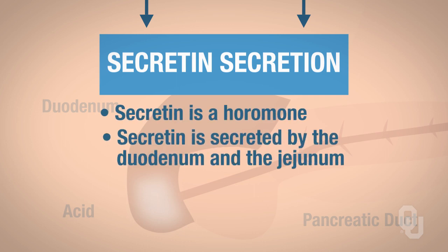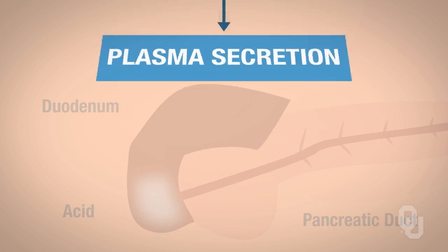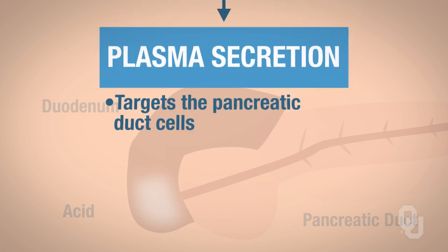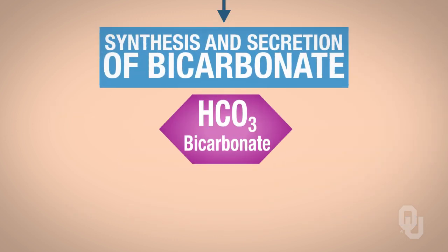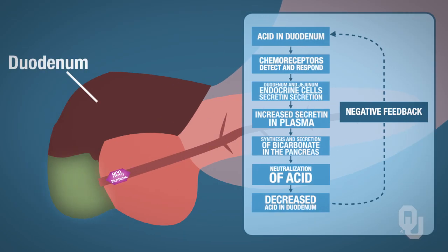Secretin is secreted by the duodenum and the jejunum. Since it's a hormone, it enters the blood—it goes into the plasma—and it's going to target the pancreatic duct cells. When it targets the pancreatic duct cells, that's going to cause synthesis and secretion of bicarbonate, HCO3. Bicarbonate can then move into the duodenum to neutralize the acids, and therefore the acidity of the duodenum becomes less—it's less acidic.